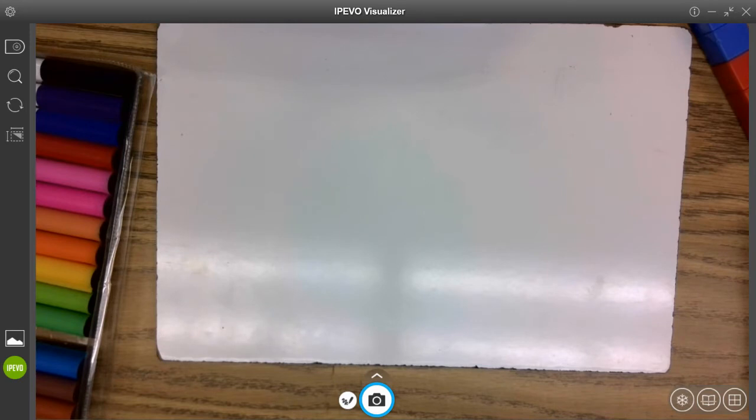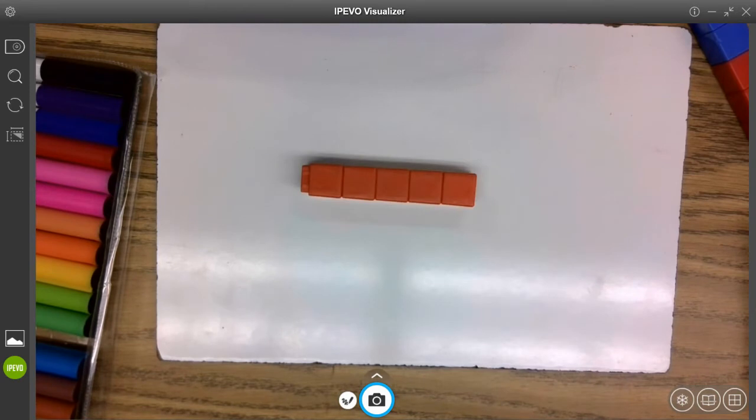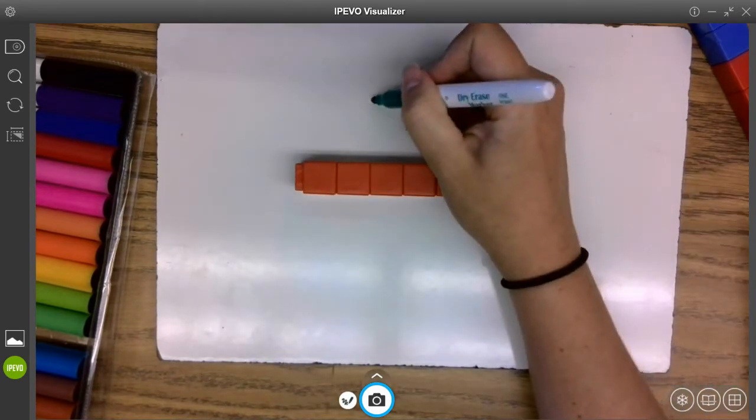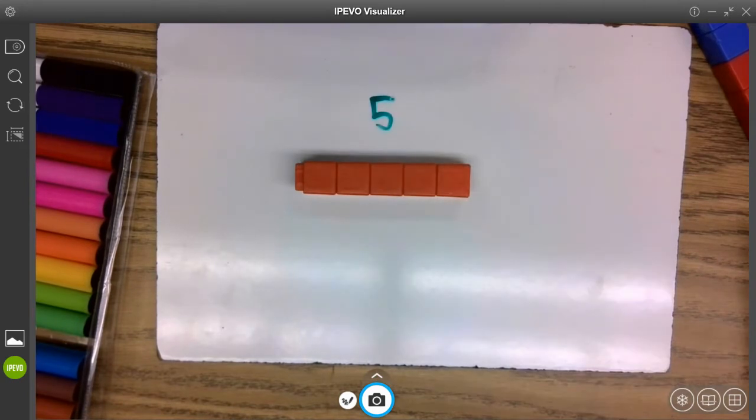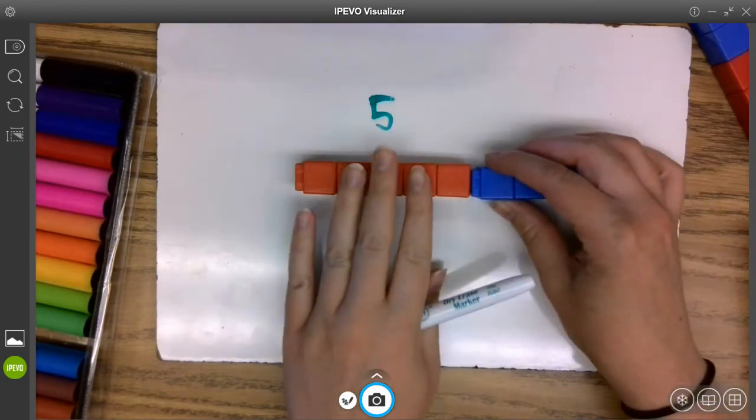This time, I'm going to start with five cubes. How many cubes do I have to begin with? I have five, so that is my first addend. If I add more, I can show that as my second addend.